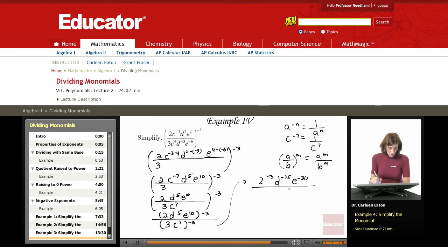In the denominator, I've got three to the negative three. And then I have C to the seventh to the negative three. So then in order to take this power to the power, I just multiply seven times negative three to get C to the negative twenty-one.